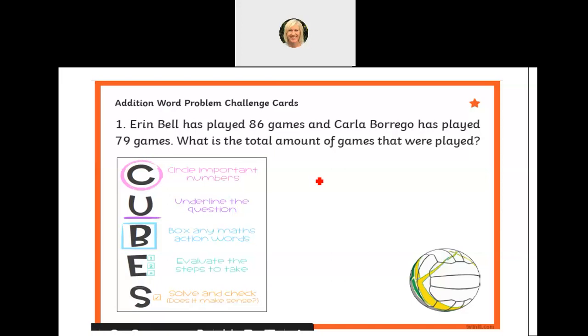The first step of CUBES says circle the important numbers. So with my pen, pencil, or drawing tool, whatever you're using, I'm going to circle the important numbers, and here they are: 86 and 79. There's the first step done.